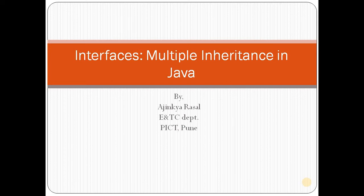Now it's time to discuss one more flavor of inheritance in Java, and that is multiple inheritance. In C++, multiple inheritance involves multiple base classes and one derived class. However, in Java, directly with the help of classes, it is highly impossible to implement multiple inheritance. Hence a new concept is required, and that is interface.